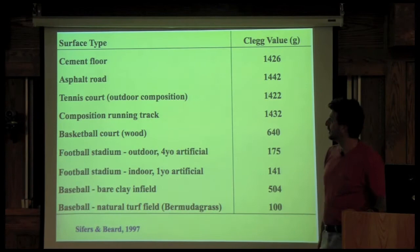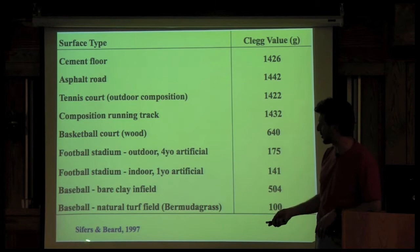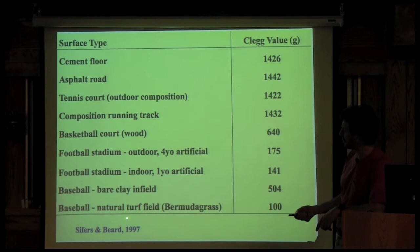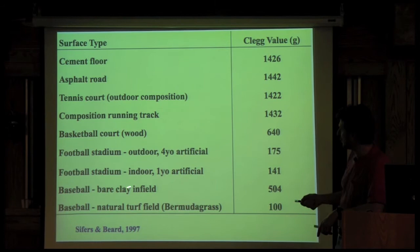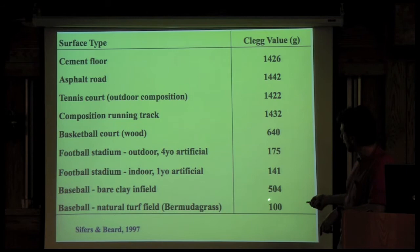From a Cifrs and Beard publication from the late 1990s, dropping the Clegg hammer on different surfaces gives perspective on hardness: a cement floor measured as much as 1,400 Gs; a football outdoor four-year artificial surface at 175; a tennis court, basketball court, baseball natural turf, and Bermuda grass field ranging from very hard to softer. What is not well understood or established in this country is how these values correlate to head injury. They have it for the GMAX testing but not yet for the Clegg hammer.